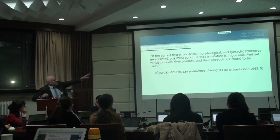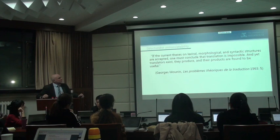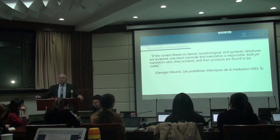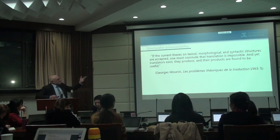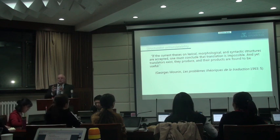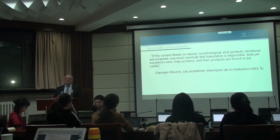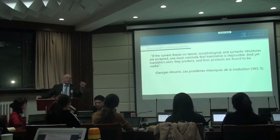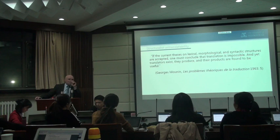Georges Mounin in 1963 picks this up: if the structuralist thesis — that lexical, morphological, and syntactic structures are language-specific — is accepted, one must conclude that translation is impossible. We've lost our business, folks. Luckily, Mounin was a confirmed Marxist who believed in the truth of praxis. He says: translators exist, they produce, and their products are found useful. Therefore either the translators are wrong or the linguistics is wrong. Historically, the linguistics were found to be wrong — but that was the problem of equivalence.